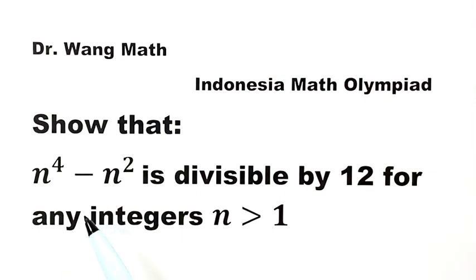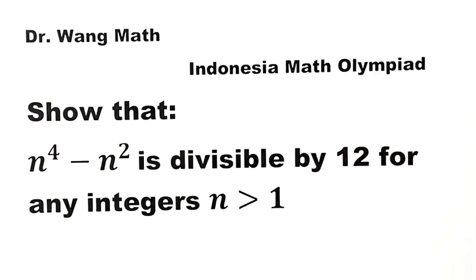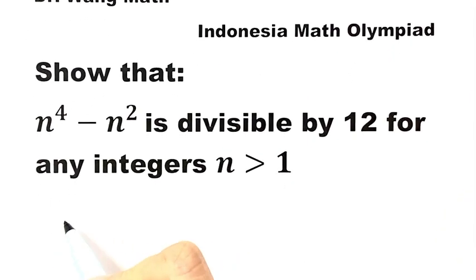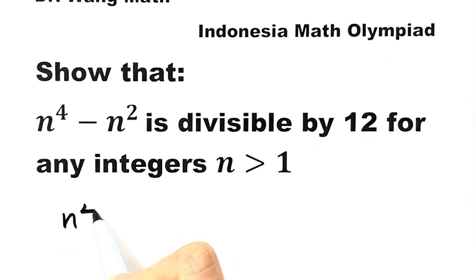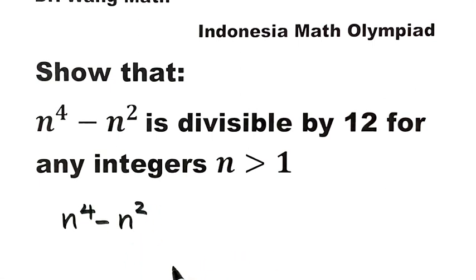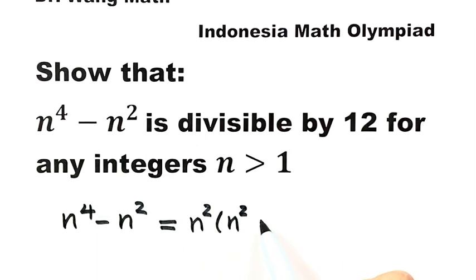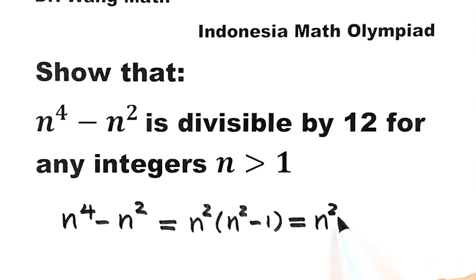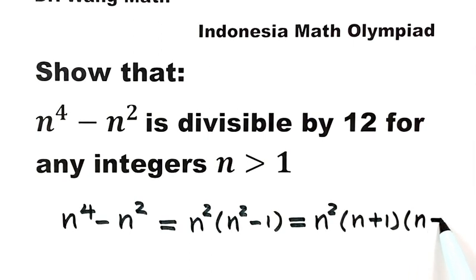Let's start here. First, note that n to the fourth minus n squared can be factored. First, take out the common factor n squared, giving n squared times (n squared minus 1). Continue factoring: n squared times (n plus 1) times (n minus 1).